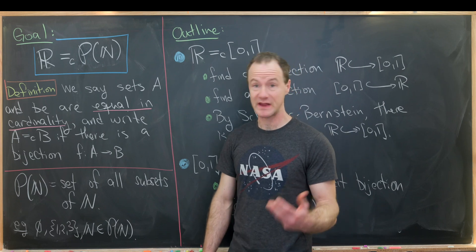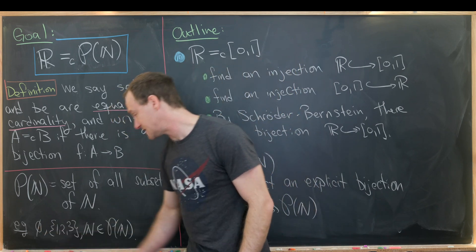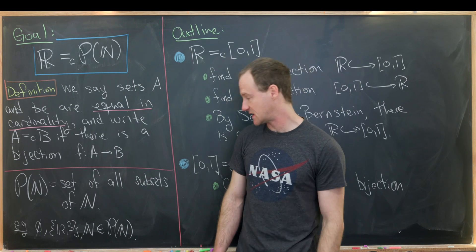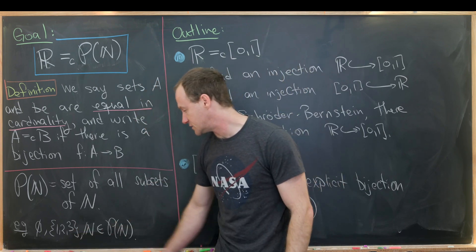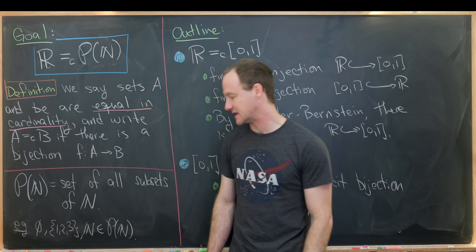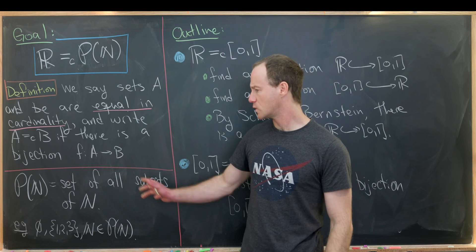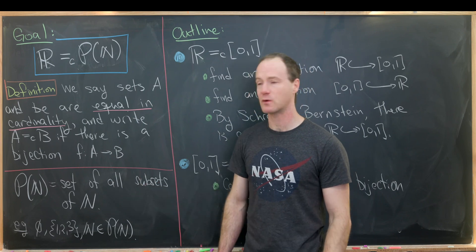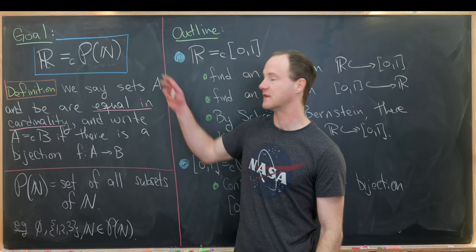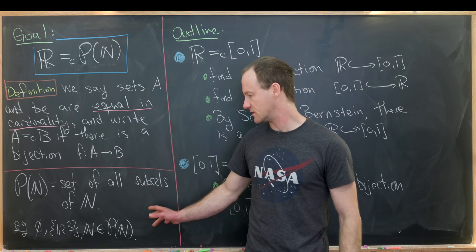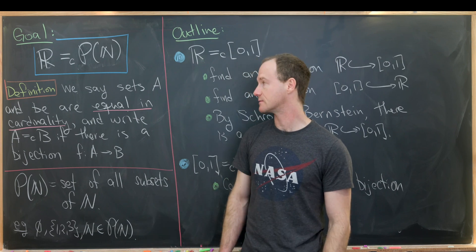Three examples would be the empty set — that's a subset of any set — the set containing one, two, three, and then the entire natural numbers. Of course you can take a power set of any set, but since we're looking at the natural numbers here, this is the example we'll have.